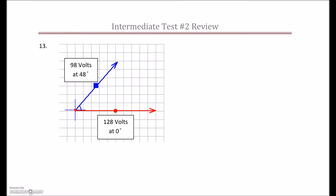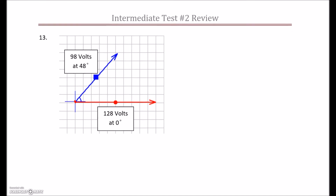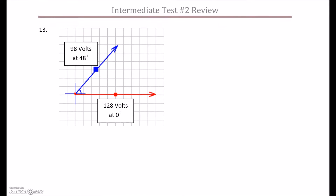Continuing on with our intermediate test 2 review, we're on question 13, and now we're on to some vector addition. We've got one vector here at 128 volts at 0 degrees, another here at 98 volts at 48 degrees, and we're going to find the vector sum for those two values.